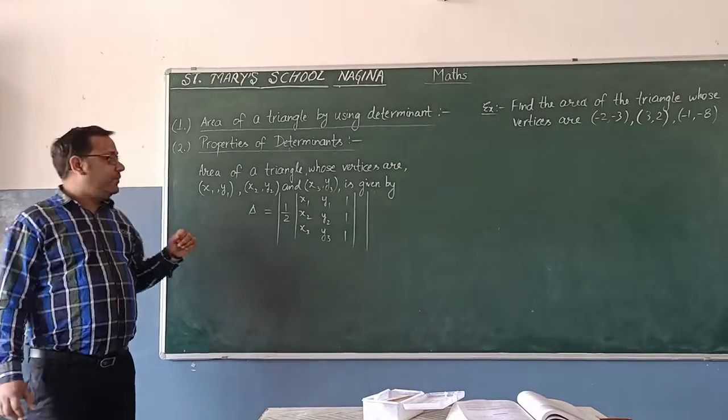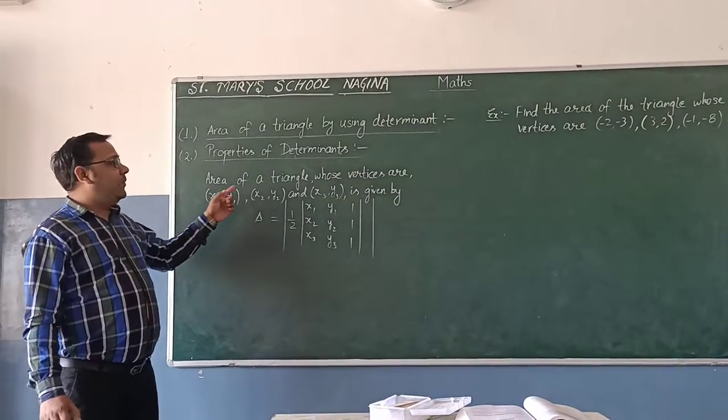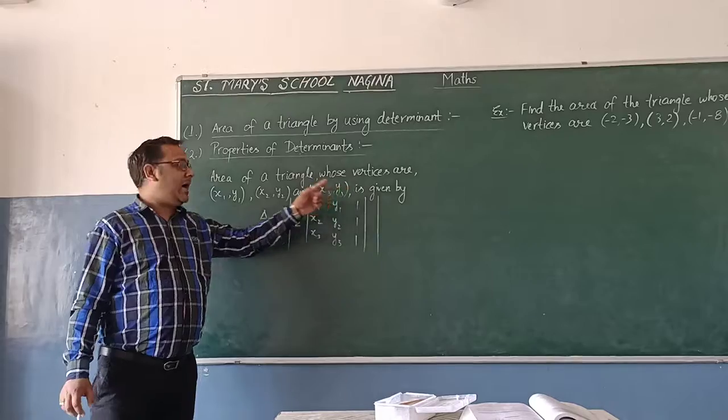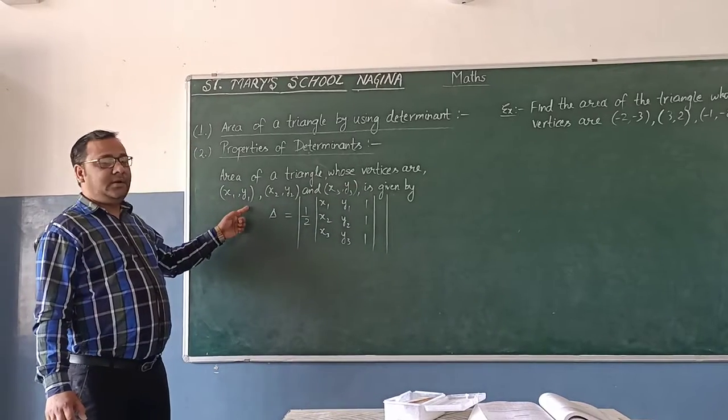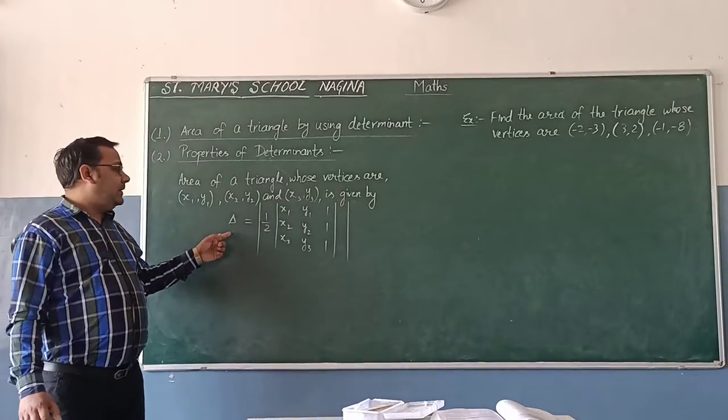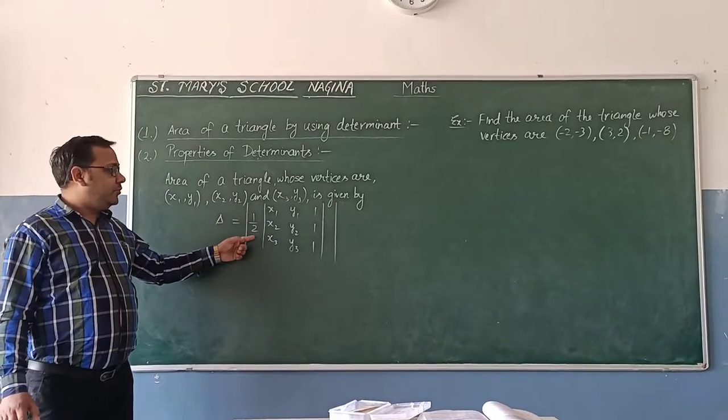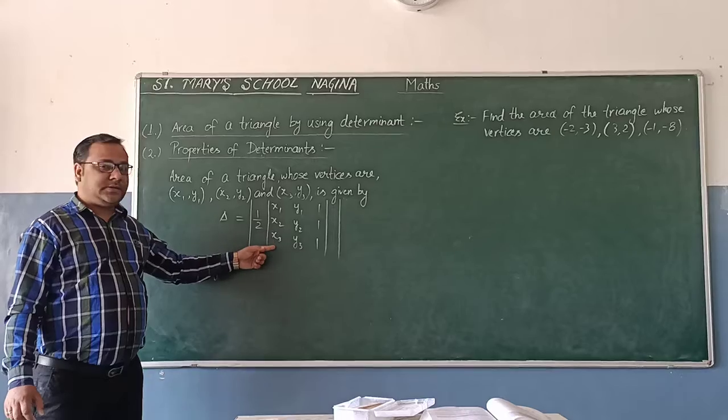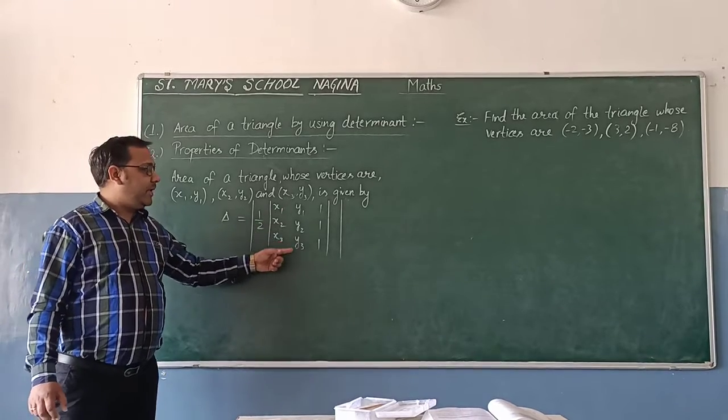How can you find the area of a triangle? Area of a triangle whose vertices are (x1, y1), (x2, y2), and (x3, y3) is given by delta equals 1 upon 2, x1, x2, x3, y1, y2, y3 for number.